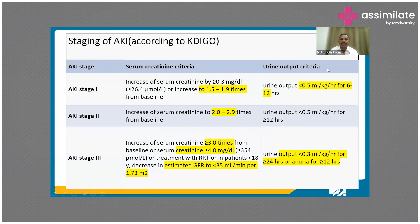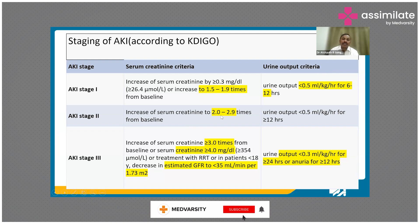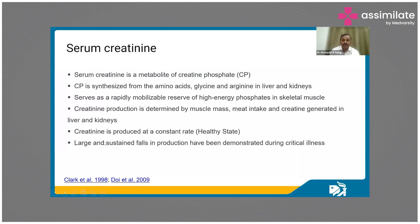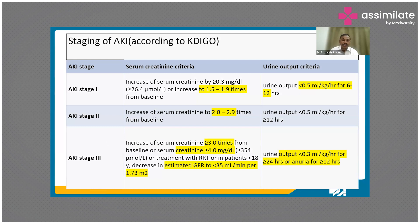The two parameters are creatinine and urine output. For creatinine: if it is 1.5 to 1.9 times the baseline, that is Stage 1. Stage 2 is between 2 and 2.9 times the baseline. Stage 3 is more than or equal to three times the baseline, or creatinine more than four milligrams per deciliter, or more than 354 micromoles per liter, or the patient is on renal replacement therapy.